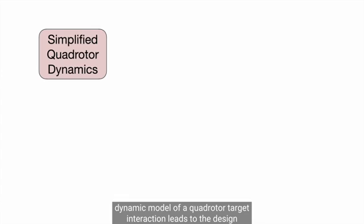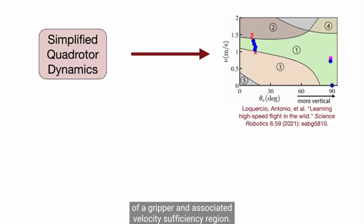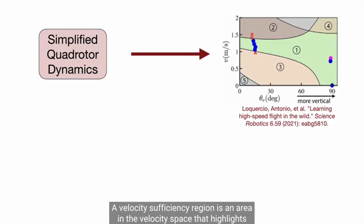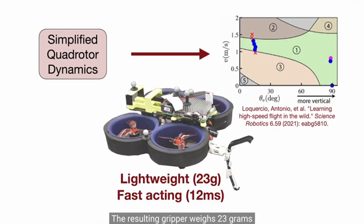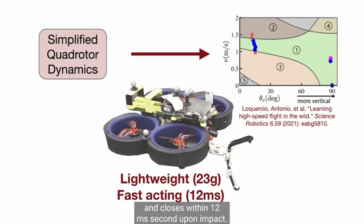We present an approach in which a simple dynamic model of a quadrotor target interaction leads to the design of a gripper and associated velocity sufficiency region. A velocity sufficiency region is an area in the velocity space that highlights velocity conditions with high probability of grasp success. The resulting gripper weighs 23 grams and closes within 12 milliseconds upon impact.